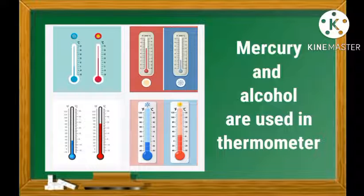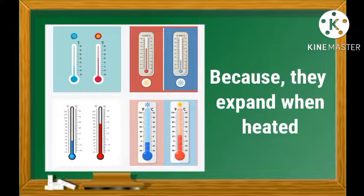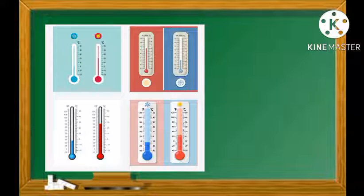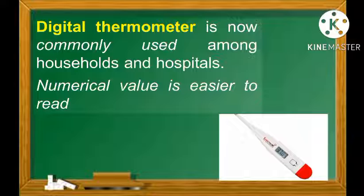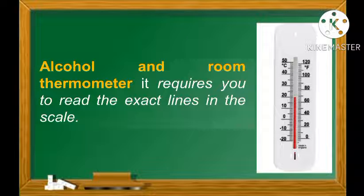In early times, mercury and alcohol were used in thermometers because they expand when heated. However, due to their harmful effects on the body and the environment, mercury is now prohibited from being used in thermometers. Thus, the digital thermometer is now commonly used among households and hospitals. If you are using a digital thermometer, the numerical value is easier to read. But for alcohol and room thermometers, it requires you to read the exact lines on the scale.